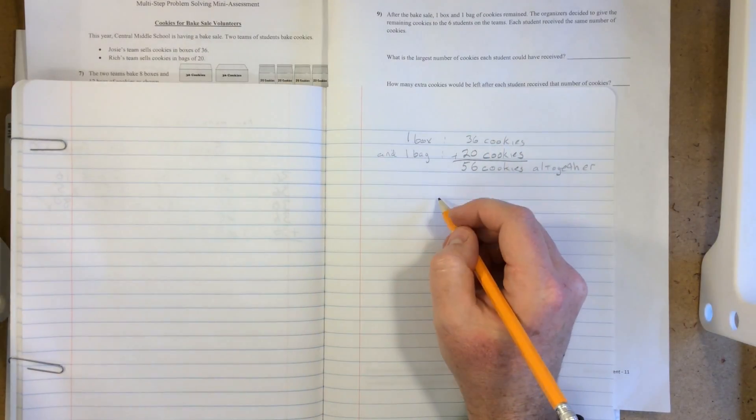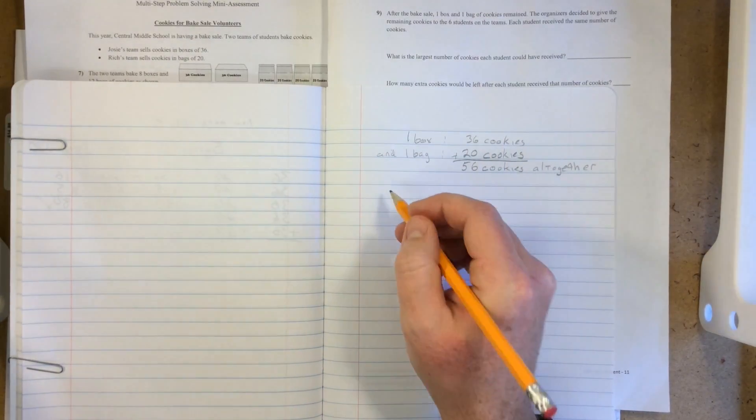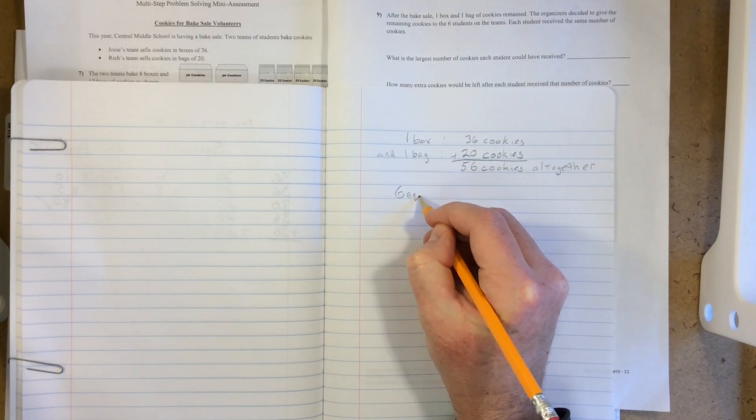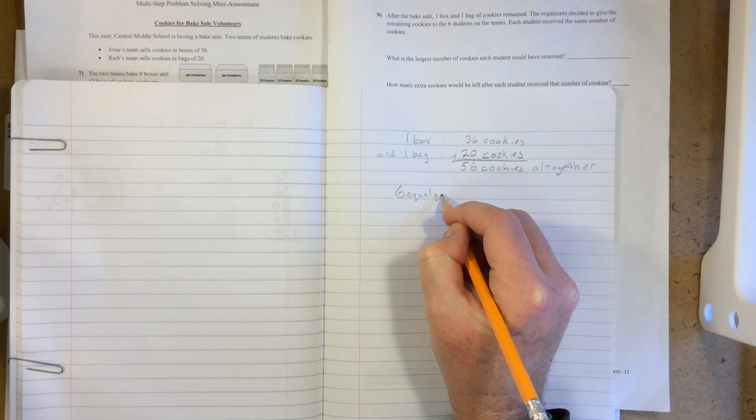Now we need to divide these evenly into six groups for the six students. So we're going to use division: 56 divided by 6.